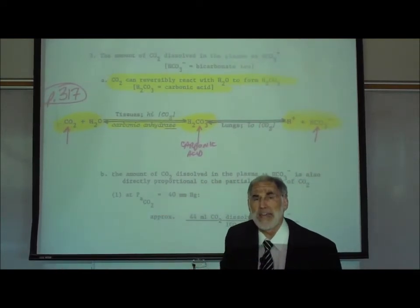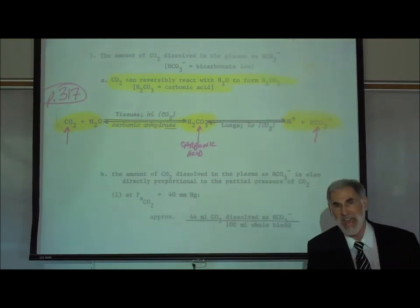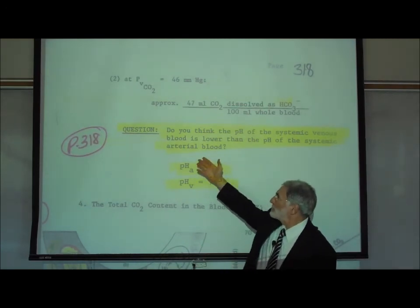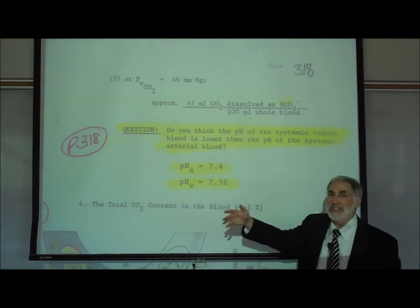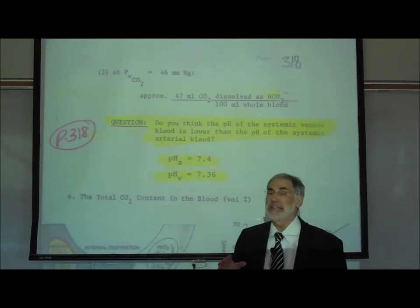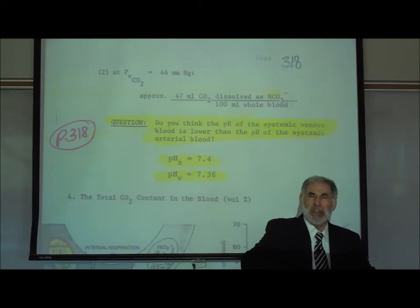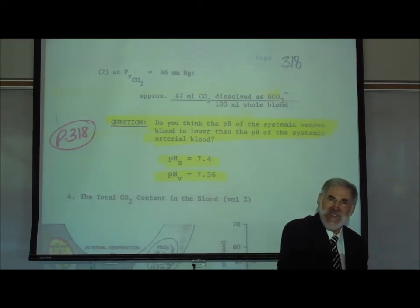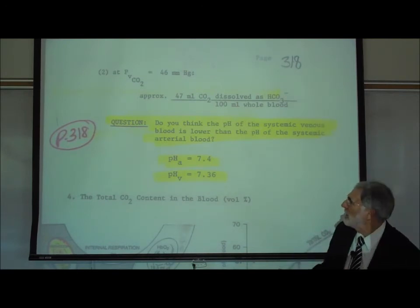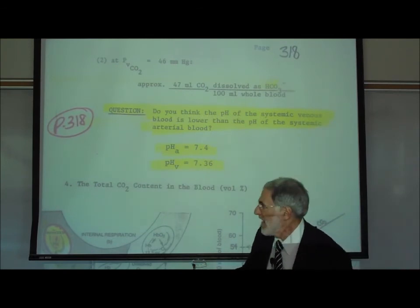So we might ask the following question, shown on the next page — page 318. Do you think that the acidity or pH of the blood might change where carbon dioxide is entering the bloodstream and forming carbonic acid, and in fact dissociating and forming free hydrogen ion? Well, in fact it does change the acidity and the pH.